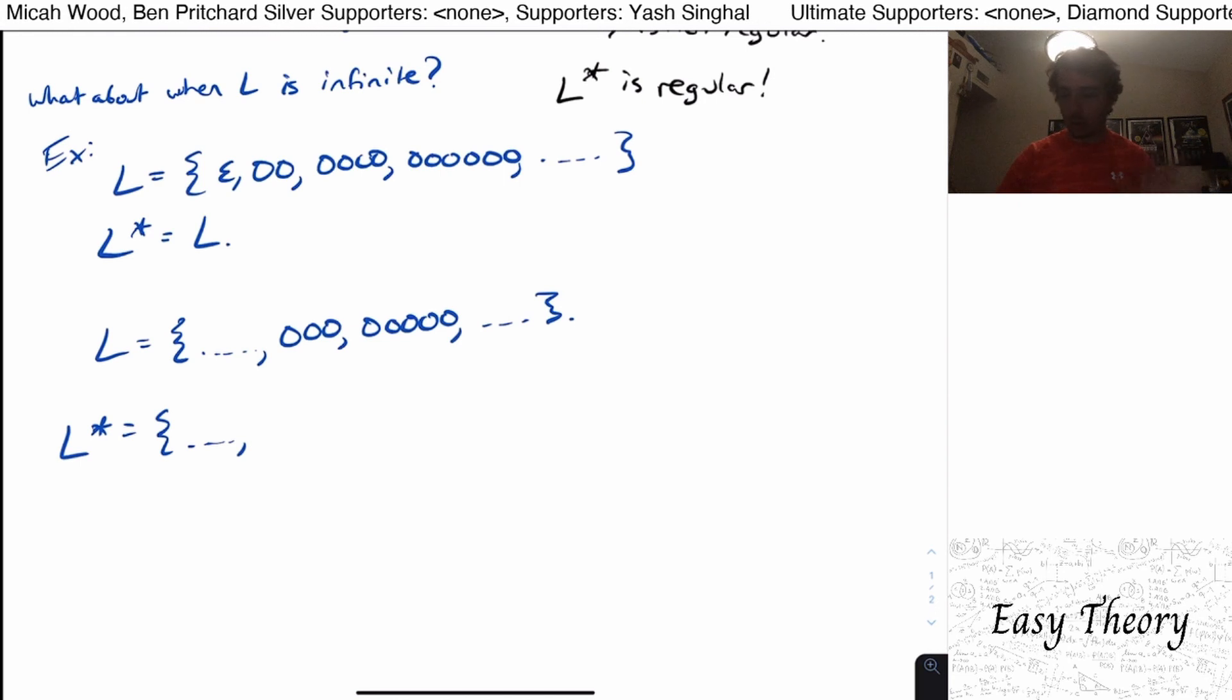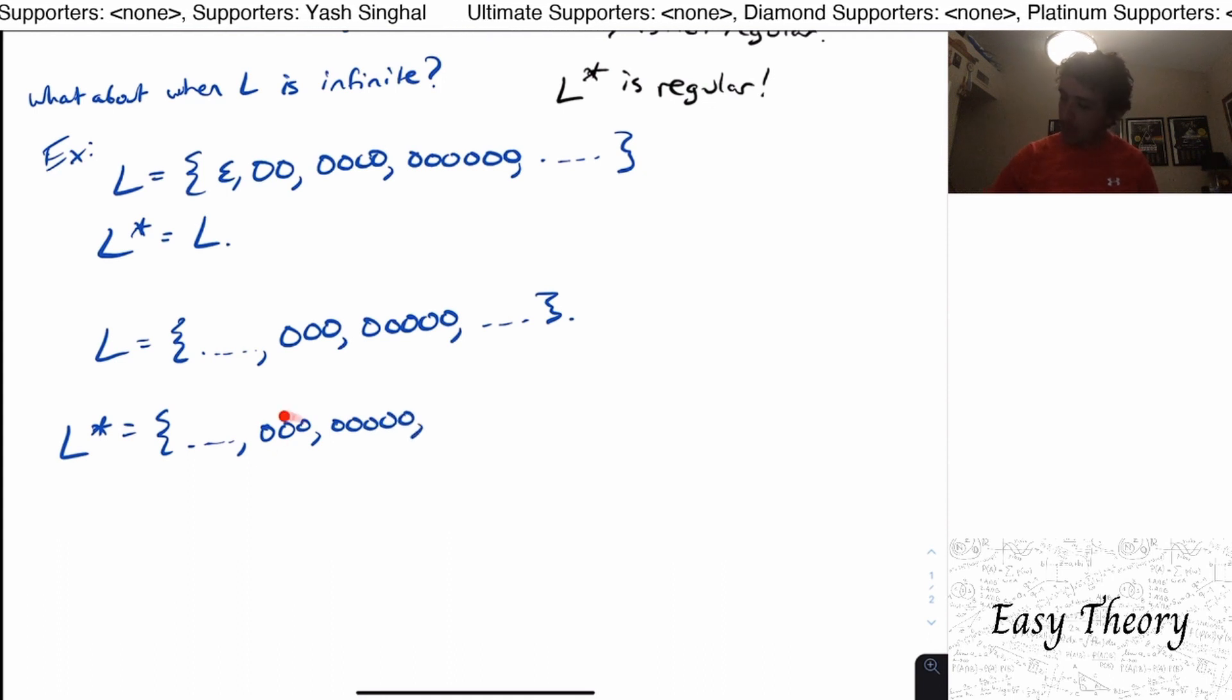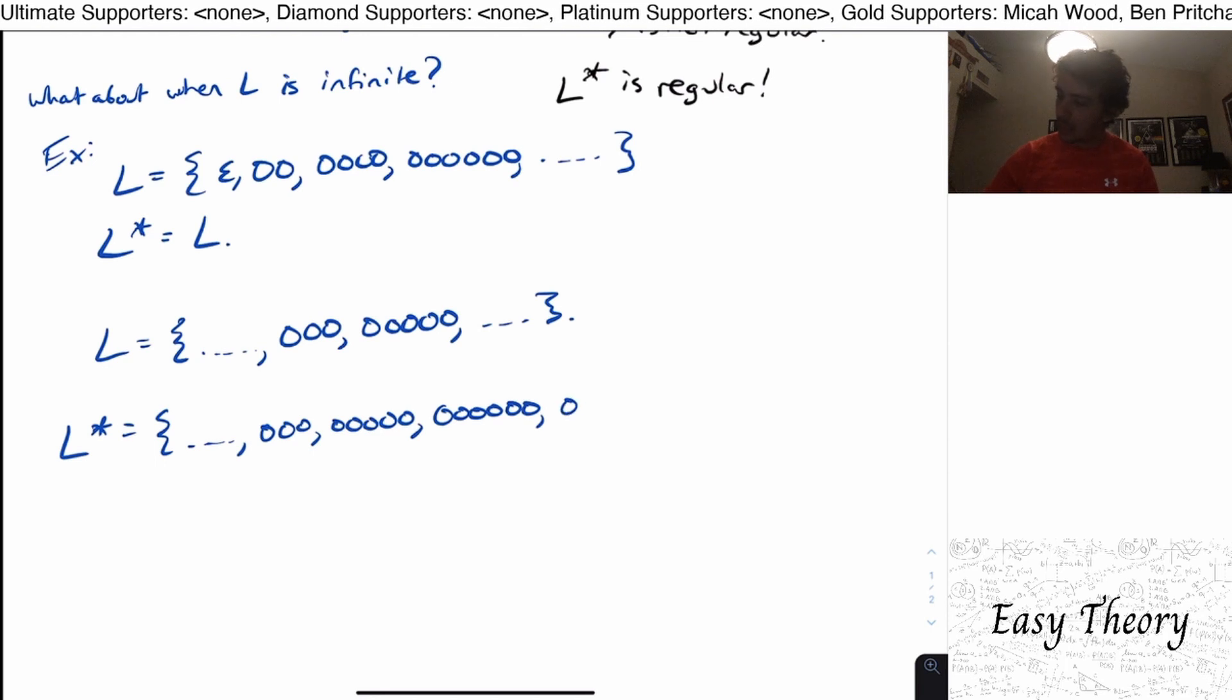But we're not going to worry about zero. Let's just think about the one case. Well, the three zeros and the five zeros are always going to be there. But if I concatenate the three zeros with itself, then I'm going to get six zeros.